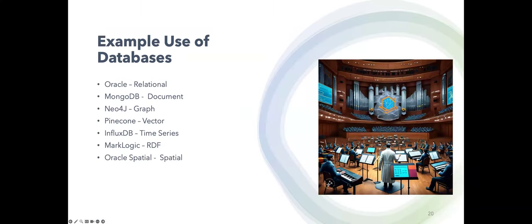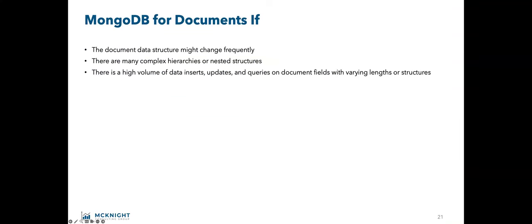Here's a typical example of database usage within a large organization: Oracle for relational, MongoDB for documents, Neo4j for graph, Pinecone for vector, InfluxDB for time series, MarkLogic for RDF data, and Oracle spatial for spatial. This might be for one application or for your architectural standard. All the decision criteria applies to both.